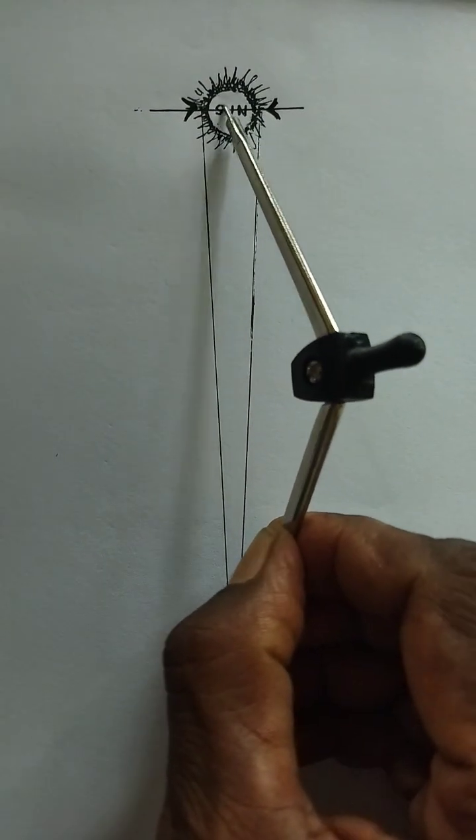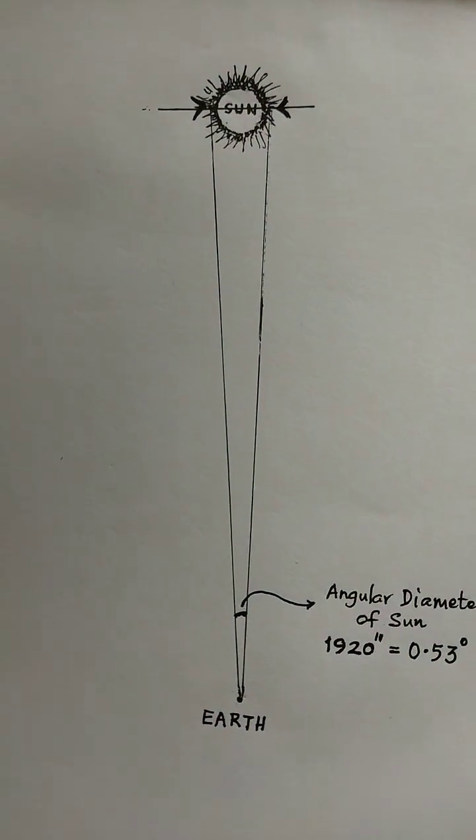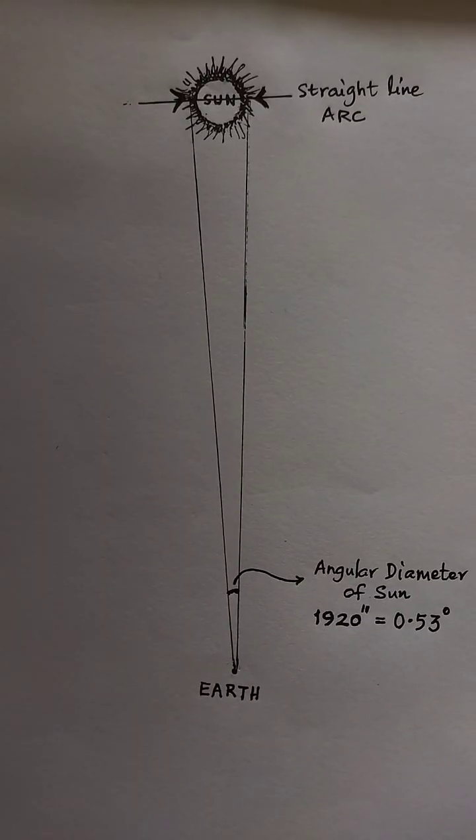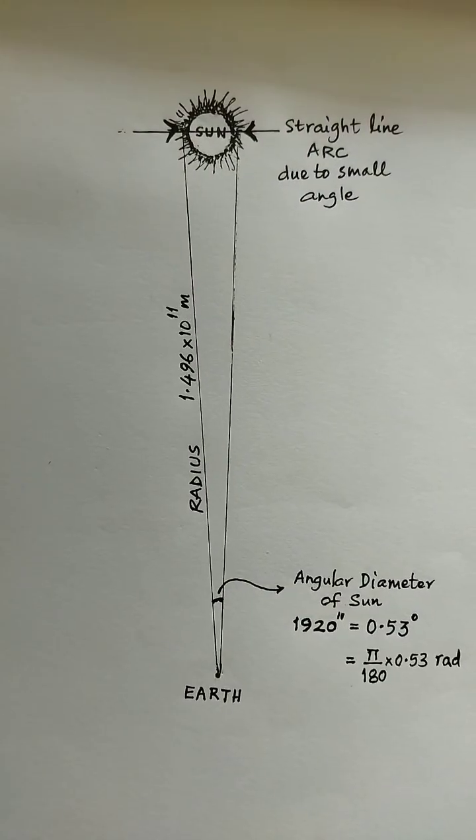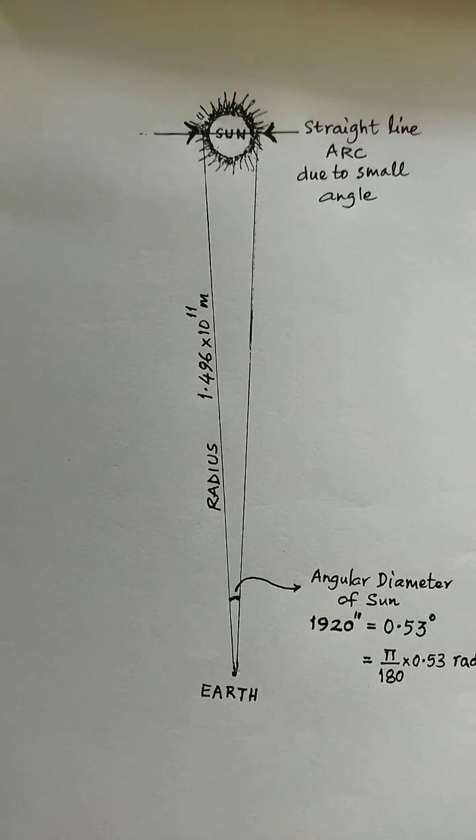That arc eventually is going to be a straight line, so the diameter will be the arc length here. We use theta equals arc upon radius to find the distance between those two end points, that is the diameter of the Sun.